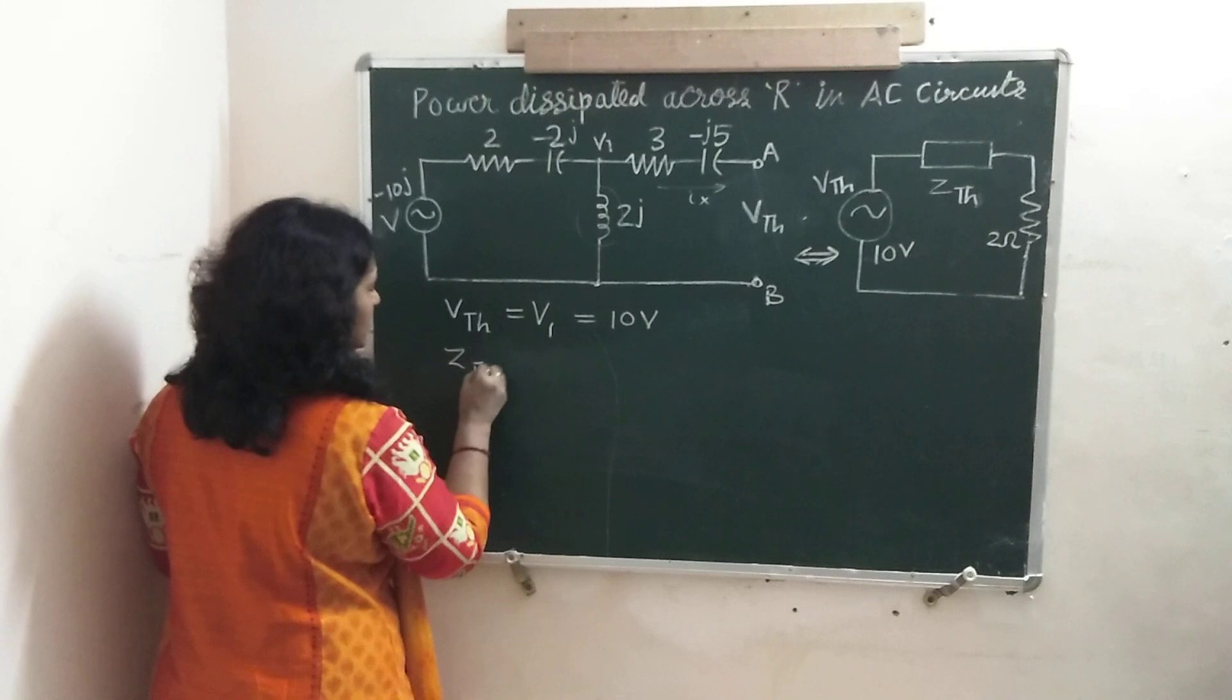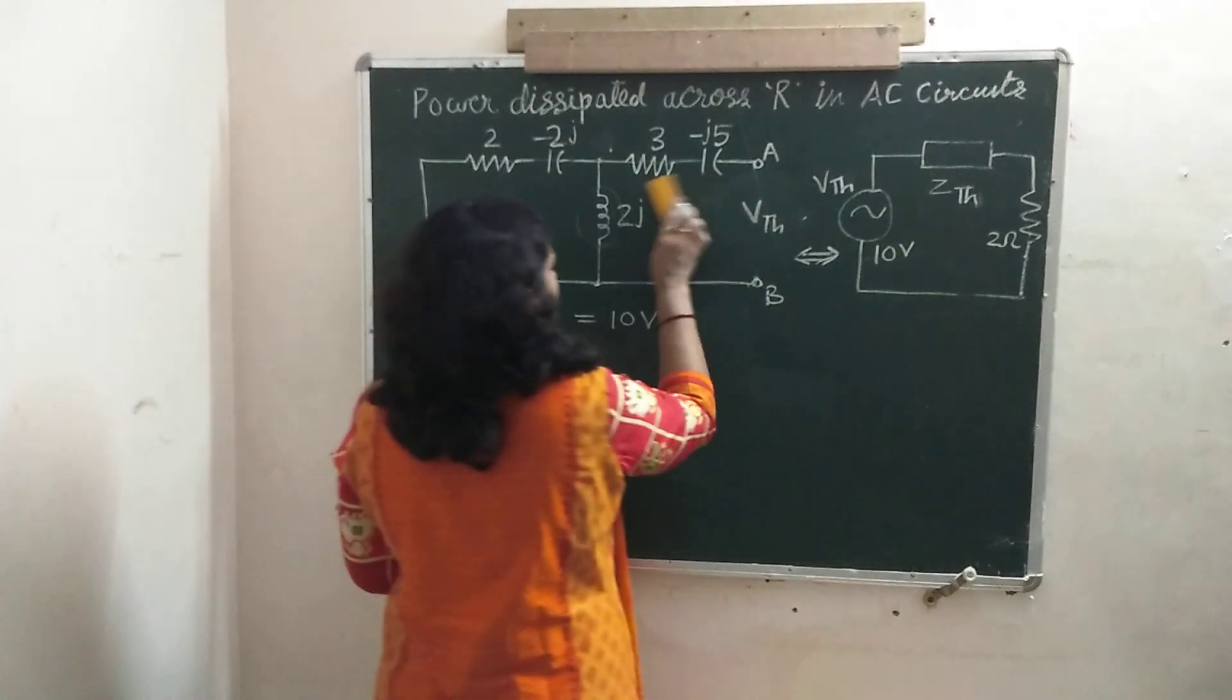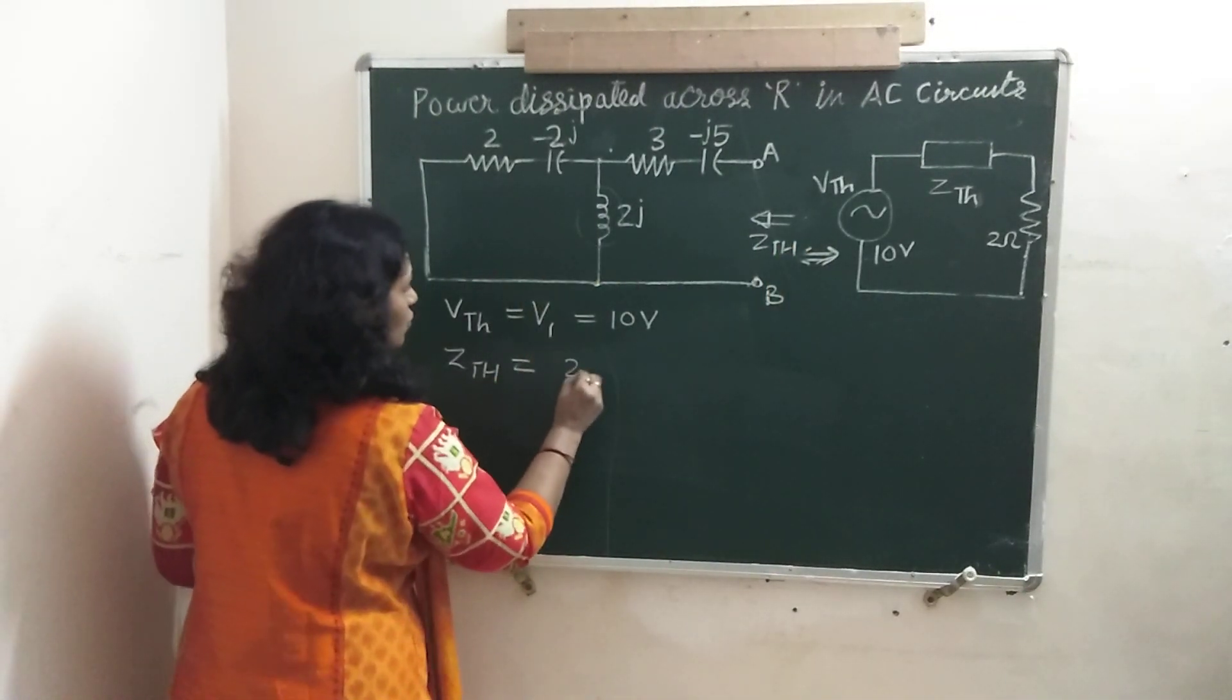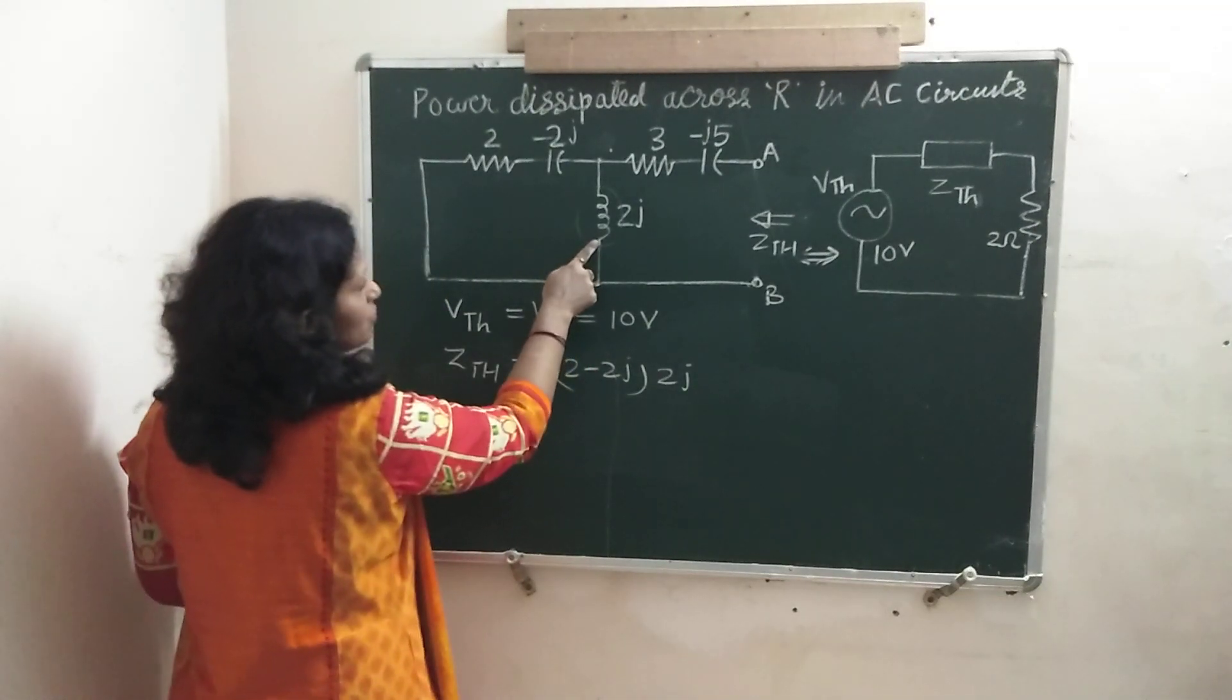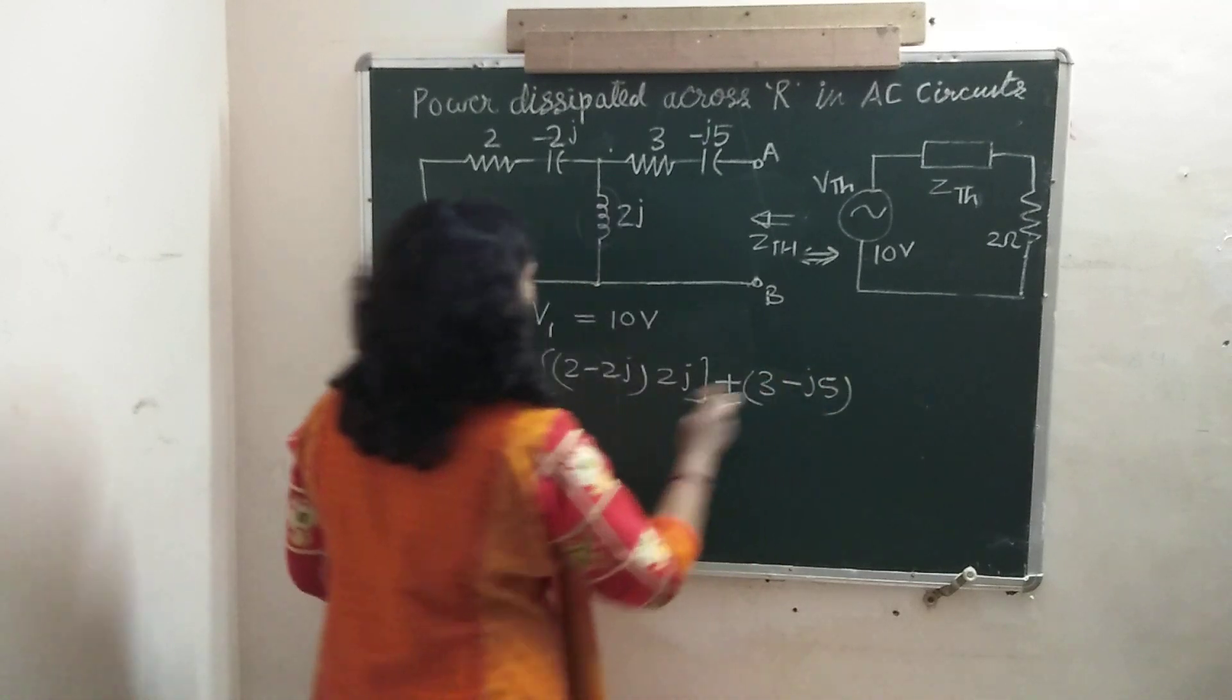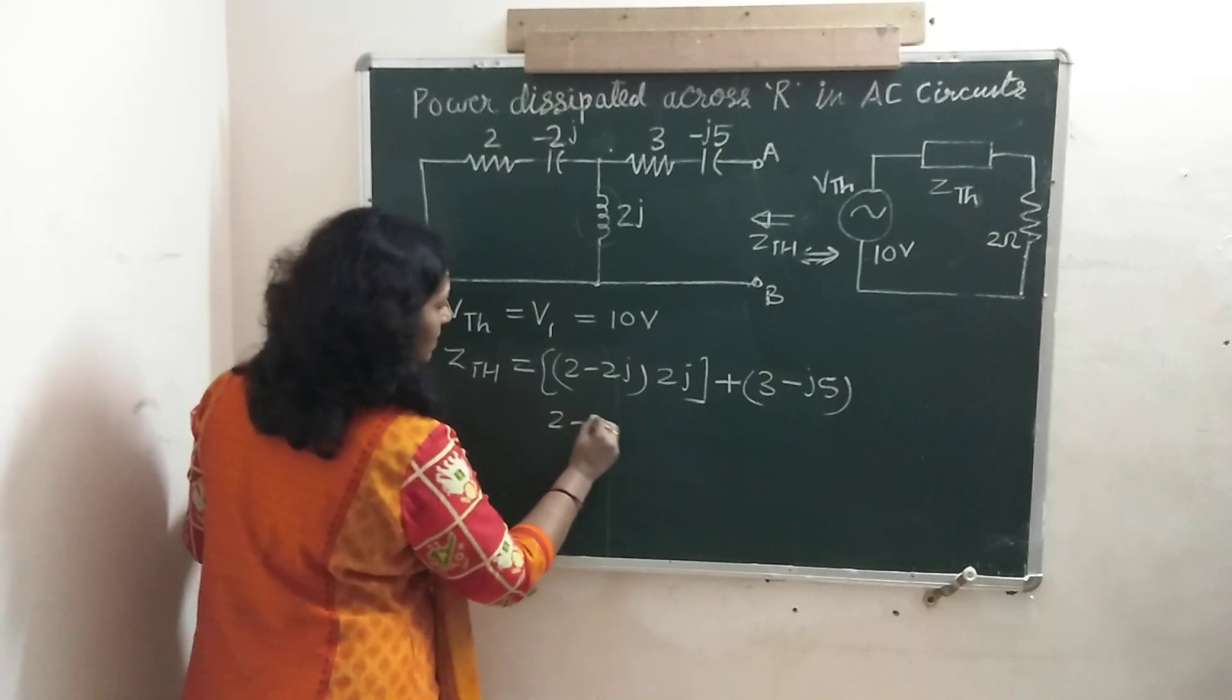Now, we will find next parameter that is ZTH. To find ZTH, remove this source voltage or short circuit it and find the impedance that we are seeing from this terminal AB. So ZTH is parallel combination of these two, 2 minus 2J, 2J parallel combination of these two impedances and series combination of the resulting with this, 3 minus J5. This is our ZTH, parallel of these two and whatever the result is in series with this. So first find the parallel.